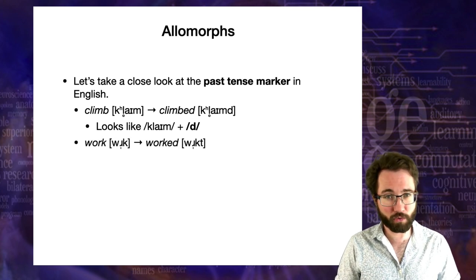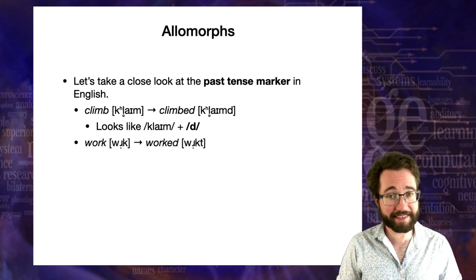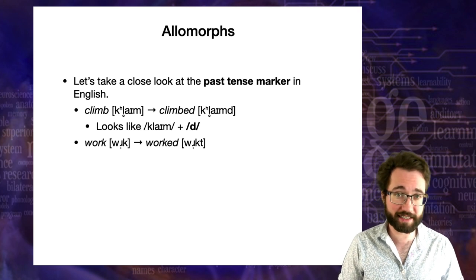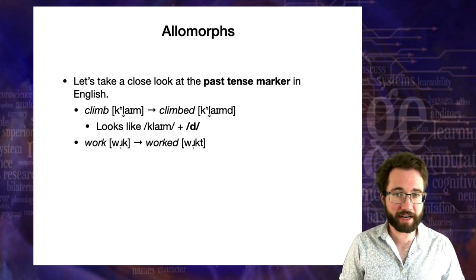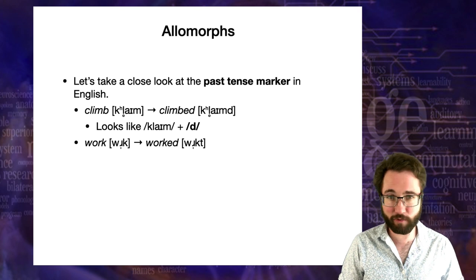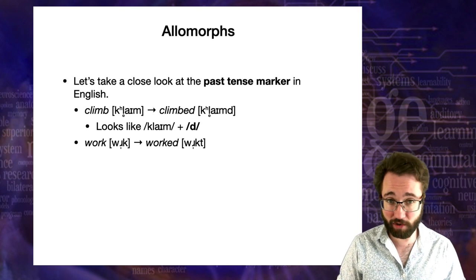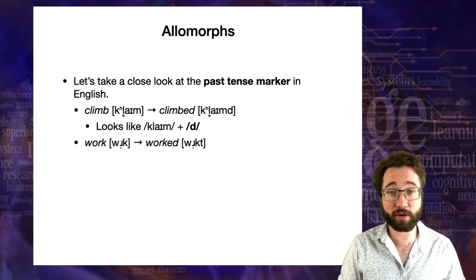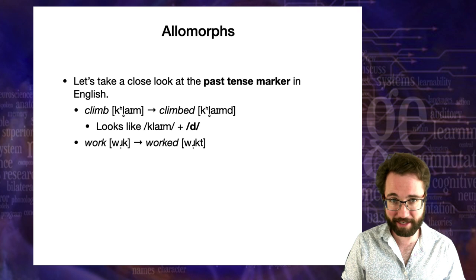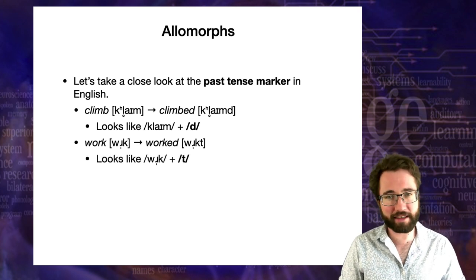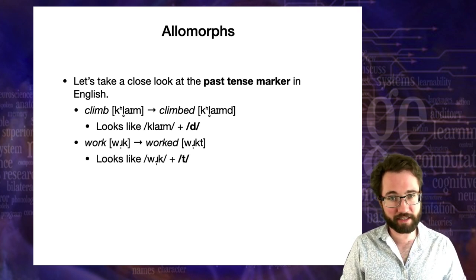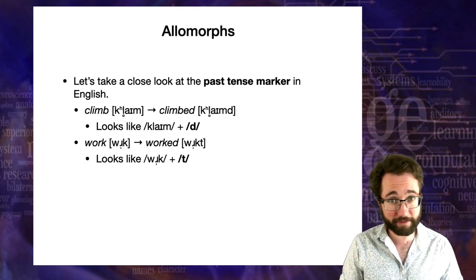Here's another example: the word 'work', and its past tense 'worked'. We want to figure out phonetically whether that final sound is voiced. 'Worked' — it's not voiced. Phonetically, it's a T at the end of that word: 'worked'. You don't say 'workd'. So it looks like in 'work', the past tense is actually a T, a different suffix.